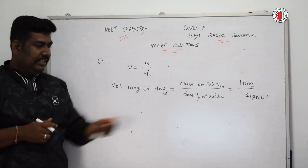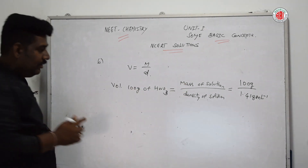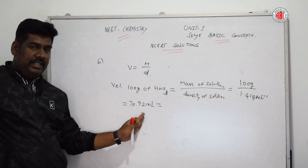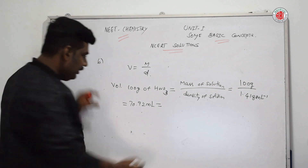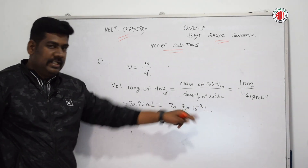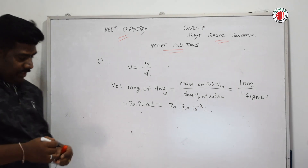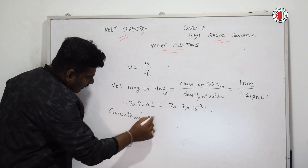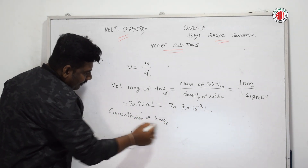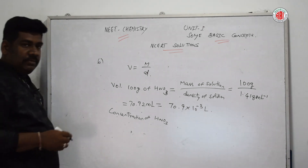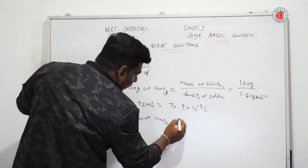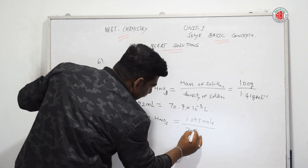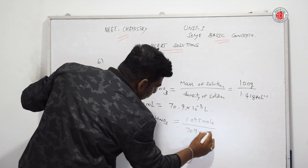Simplifying: we get approximately 70.92 mL, which in liters is 70.9 × 10⁻³ liters. Now we find the concentration of HNO₃: number of moles = 1.095 moles divided by volume = 70.9 × 10⁻³ liters.